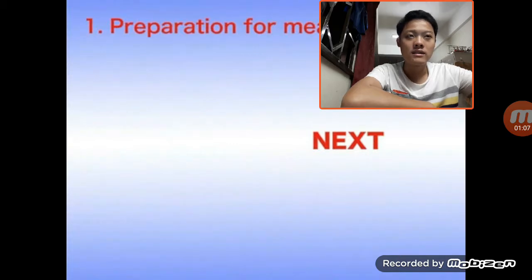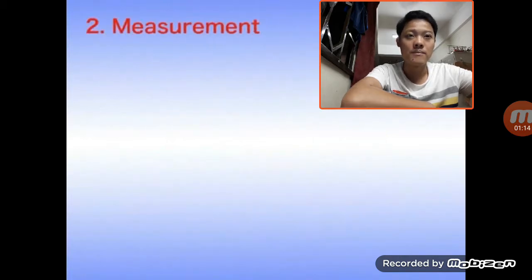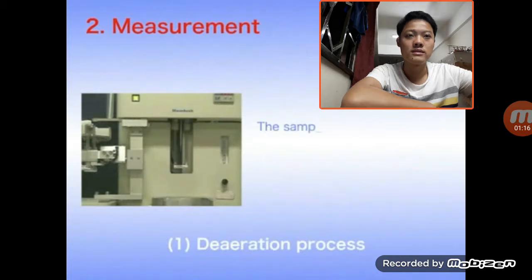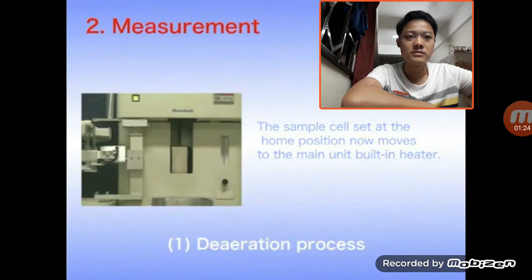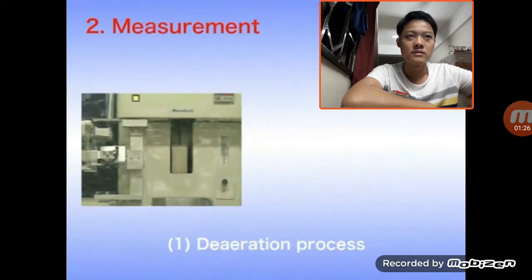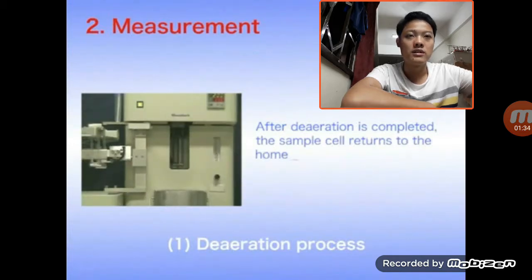The next step is the degassing process. This process is a sample self-preparation. After the degassing is completed, the sample cell returns to position.